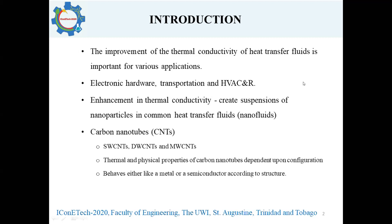In particular, we are looking at a type of nanoparticle called the carbon nanotube, and this is divided into three categories: SWCNTs, which are single-walled carbon nanotubes; double-walled carbon nanotubes, DWCNTs; and multi-walled carbon nanotubes, MWCNTs. A very interesting thing about carbon nanotubes is that their thermal and physical properties are strongly dependent upon their chemical configuration, and in fact they can behave either like a metal or like a semiconductor, according to their particular chemical structure or arrangement.